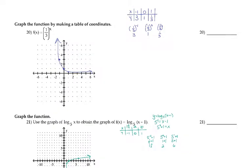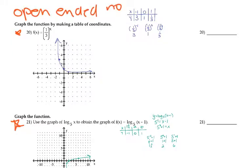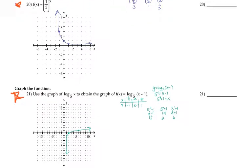All the graphing is open-ended, no calculator. For the exponential function, plug in x equals negative 1, 0, and 1 to get 3, 1, and 1/3. Plot your points and connect the curve. For the log, plug in for y instead. Take y equals log base 5 of (x minus 1), convert to exponential form, solve for x, and plug in y equals negative 1, 0, and 1 to get your points: 1/5 plus 1, 1 plus 1, and 5 plus 1.